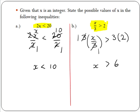For example, if we take x to be 9, we get 9 divided by 3 which is 3, and 3 is greater than 2. However, if we take x to be 3, which is not an integer greater than 6, we would get 3 divided by 3 which is 1, and 1 is not greater than 2.